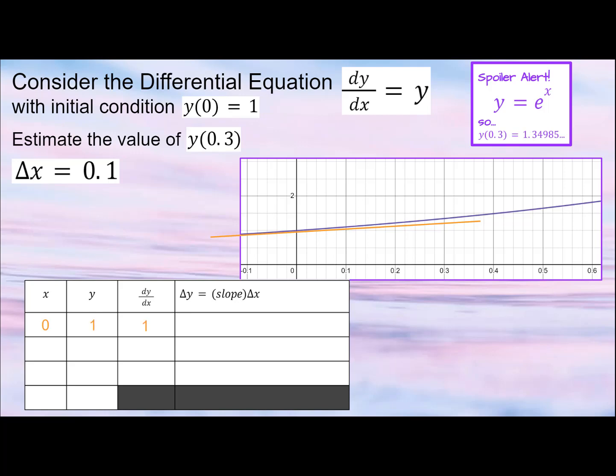The x value for each step is based on delta x, so those are fixed values. To find the change in y for the next step, multiply the slope, or your dy/dx value, by the constant change in x, delta x. So if the change in y is 0.1, we will add that to our previous y.